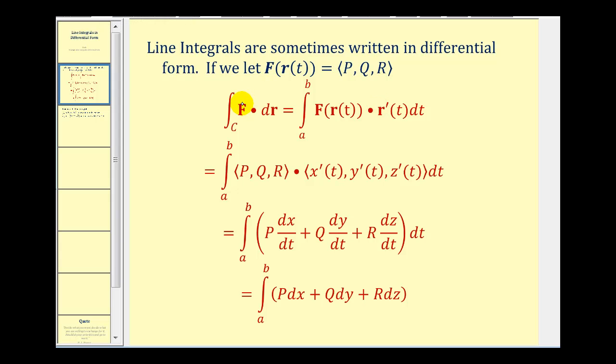So again, what this is saying is the vector field f is rewritten as a function in terms of t, and then differential r equals r prime of t dt. So here's our vector field dotted with r prime of t, and when we calculate this dot product, we rewrite x prime of t, y prime of t, and z prime of t as dx dt, dy dt, and dz dt.